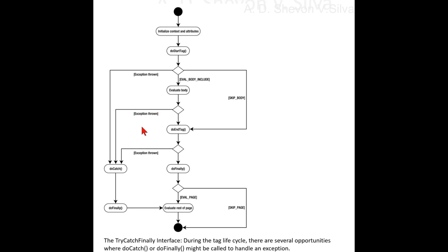If the exception should be propagated further up to the calling stack, perhaps to the JSP error page, the doatch method can handle the exception as required and then subsequently re-throw the same or a new exception. This is useful because there's no way to tell the tag handler class to catch only specific subclasses of exception. Instead, the doatch method handles all exceptions, and it is up to us as tag developers to decide which to handle and which to re-throw.